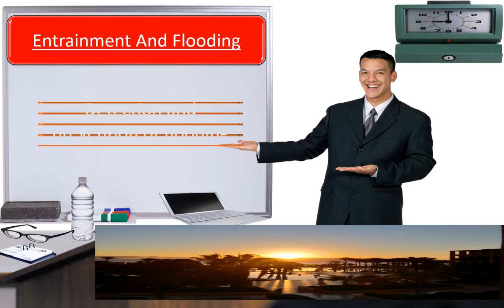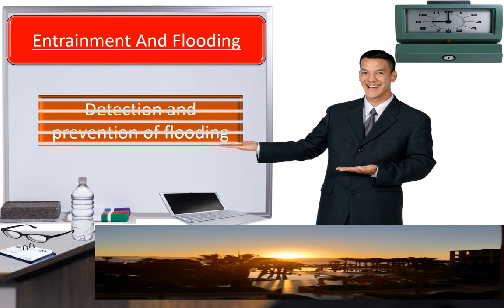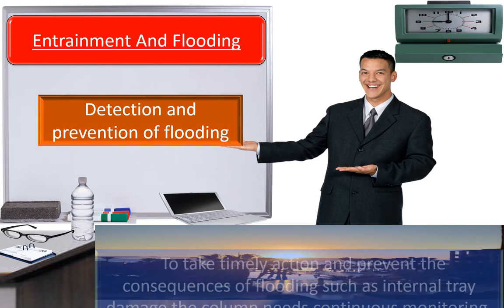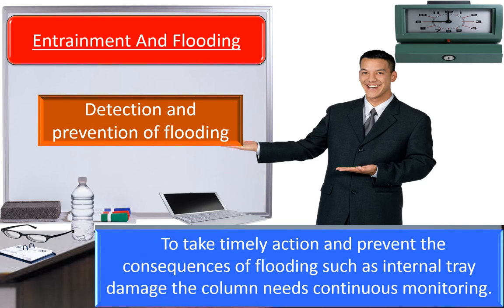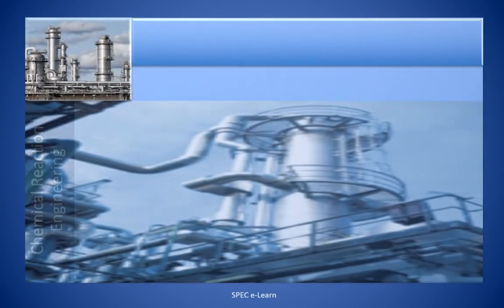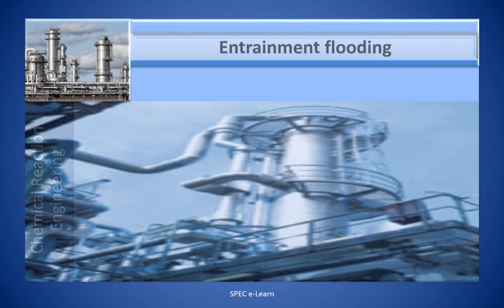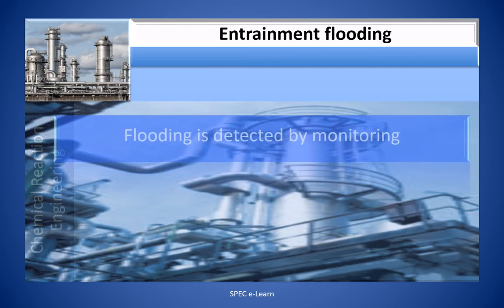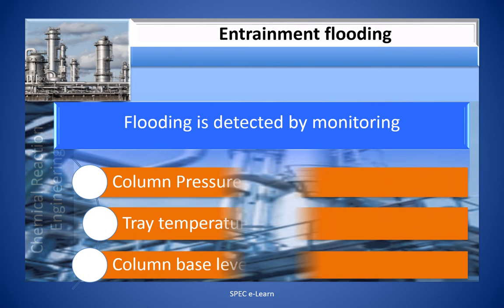Detection and prevention of flooding. To take timely action and prevent the consequences of flooding — such as loss of efficiency and internal damage — the column needs continuous monitoring. Flooding is detected by monitoring several parameters.